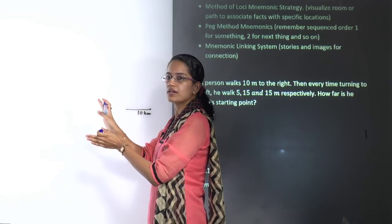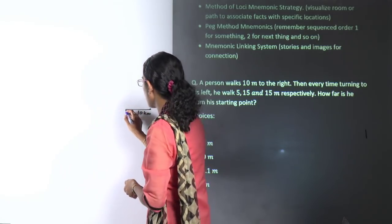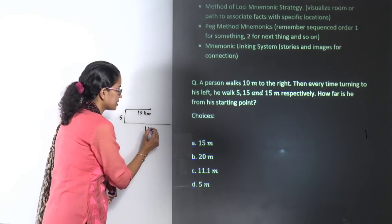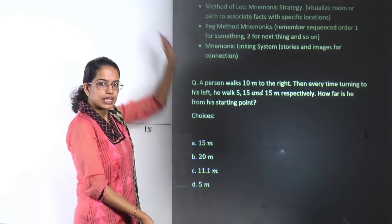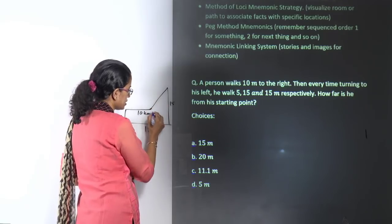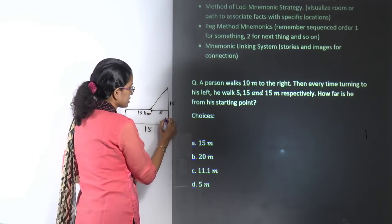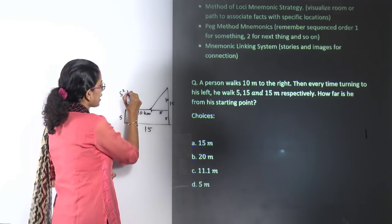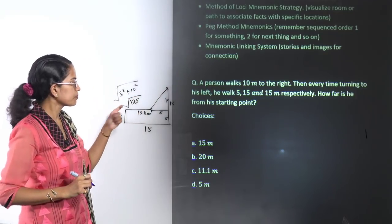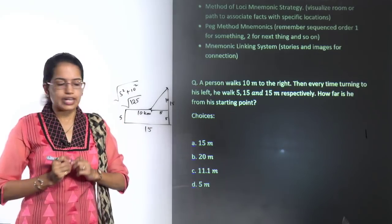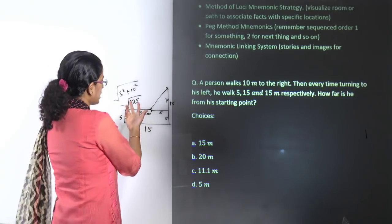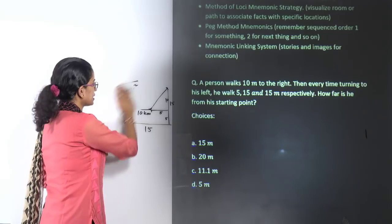From the point after walking 10 km right, the person turns left and walks 5 km, then 15 km left, then another 15 km left. To find the distance from the starting point, the horizontal displacement is 5 and the vertical displacement is 10. Using Pythagoras: √(5² + 10²) = √125, which is approximately 11 — slightly more than 11 since 11² = 121.